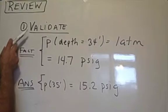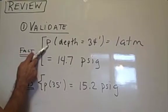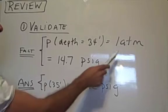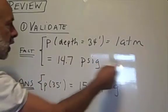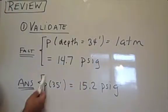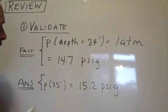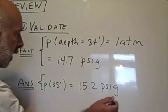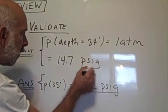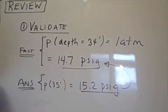To validate our answer, we can use the fact that the pressure in water at a depth of 34 feet is 1 atmosphere. This is a conversion factor that's useful to memorize, and 1 atmosphere is 14.7 pounds force per square inch gauge. We're at 35 feet of depth, and notice that the answer here is very close to this. That gives us confidence that we can trust our answer.